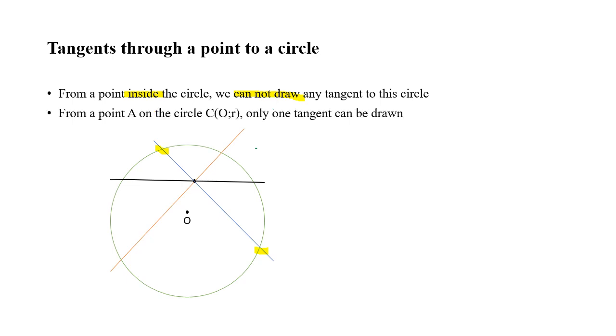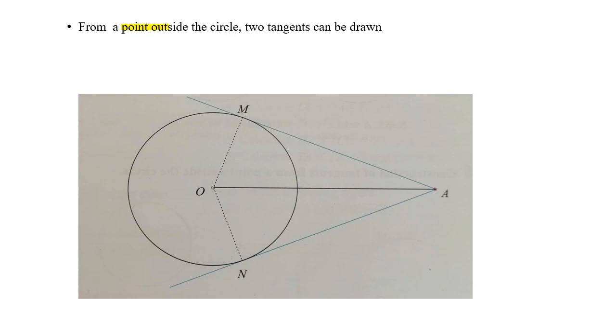So from a point inside the circle we cannot draw any tangent to the circle. From a point A on the circle, as you see in this figure, we can draw only one tangent on the circle. Finally, if a point is outside the circle, then two tangents can be drawn. Tangent from point A to tangency point M, so AM is tangent to the circle. Because AM is tangent to the circle, then AM is perpendicular to OM. Also AN is the second tangent.